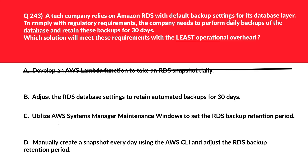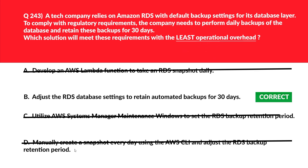Option C says utilize AWS Systems Manager Maintenance Window to set the RDS backup retention period. Using Systems Manager Maintenance Windows to modify the RDS backup retention is more complex than directly modifying the RDS settings, so we eliminate this. Option D says manually create a snapshot every day using the AWS CLI. Manually doing anything in the cloud is not recommended — it's prone to error, we might miss days, and it adds operational overhead. We'll reject this and lock option B as the right answer.